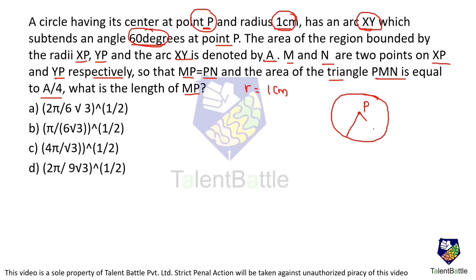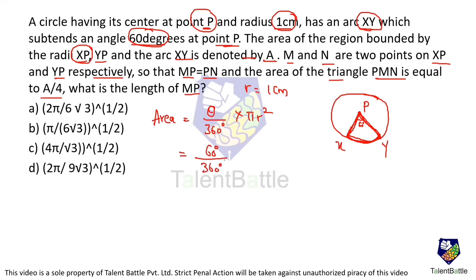Drawing the circle: center P, radius 1 cm, arc XY subtends 60° at P. The shaded region is a sector, so its area A = (θ/360°)·π·r² = (60/360)·π·1² = π/6. Therefore A = π/6.